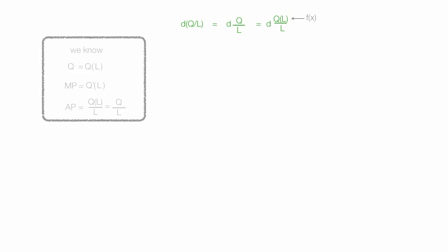I'm going to rewrite this and take the first derivative using the quotient rule. If k of x equals f of x divided by g of x, I can use the quotient rule to get the first derivative. The derivative of k of x equals g of x times the first derivative of f of x, minus f of x times the first derivative of g of x, all divided by g of x squared.